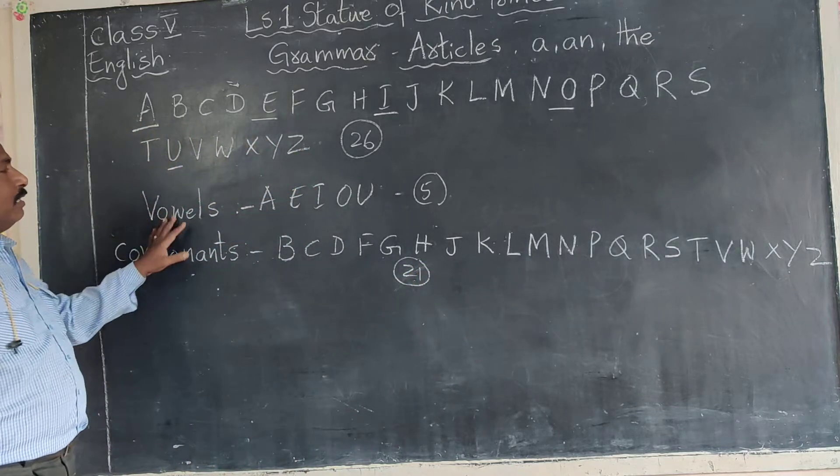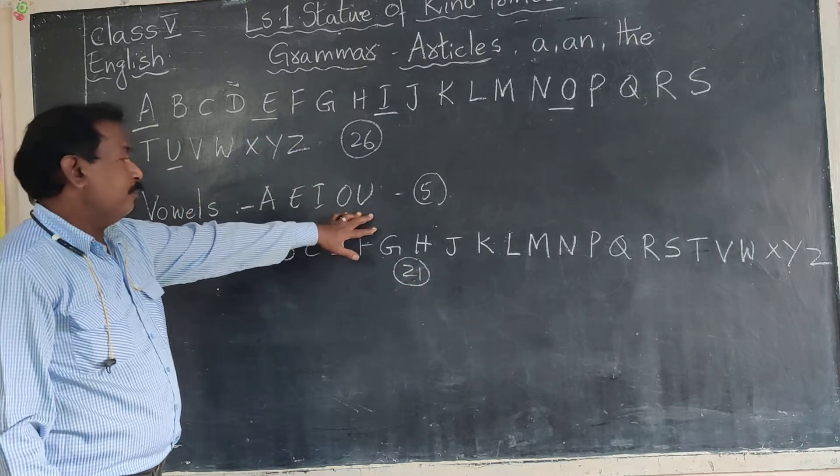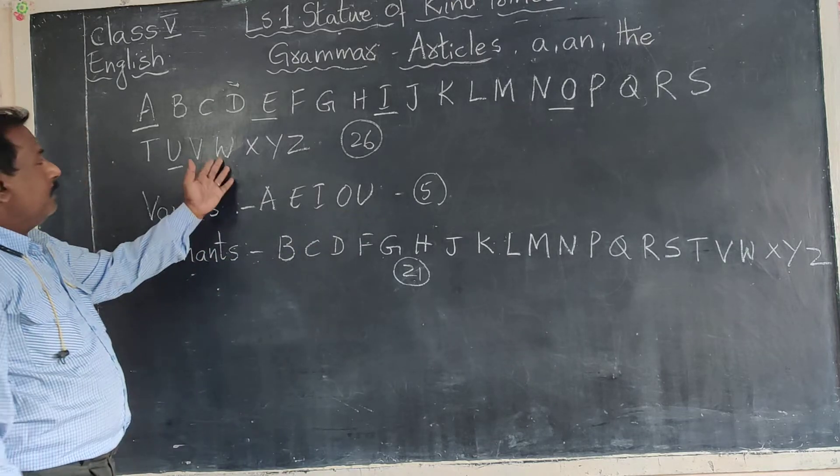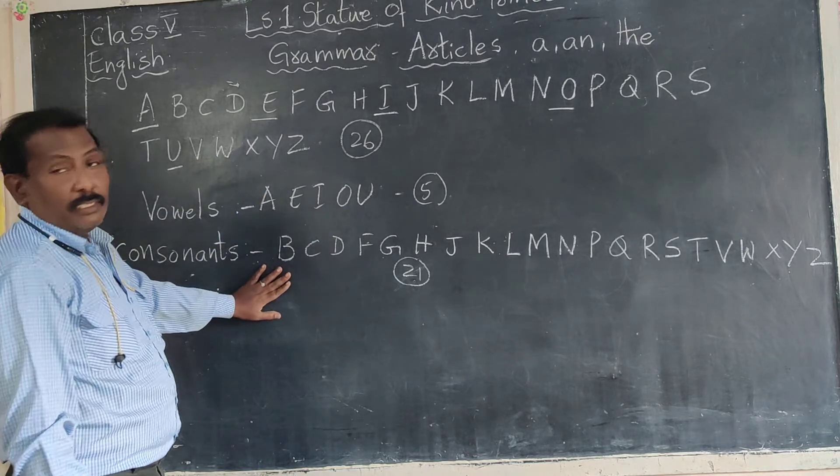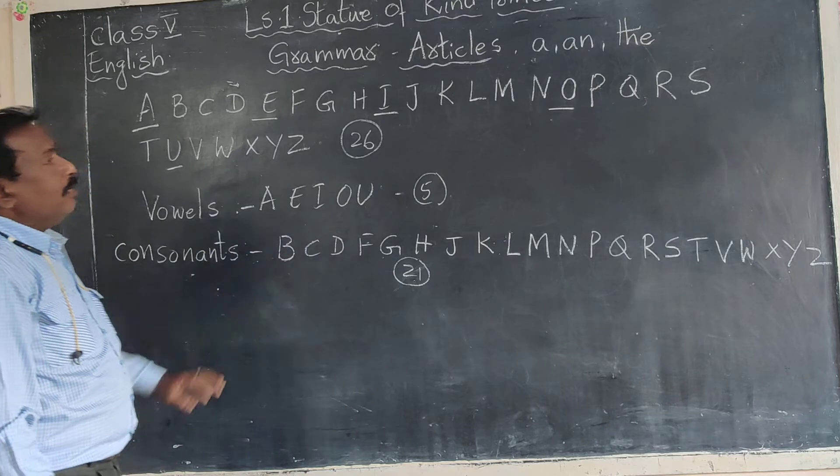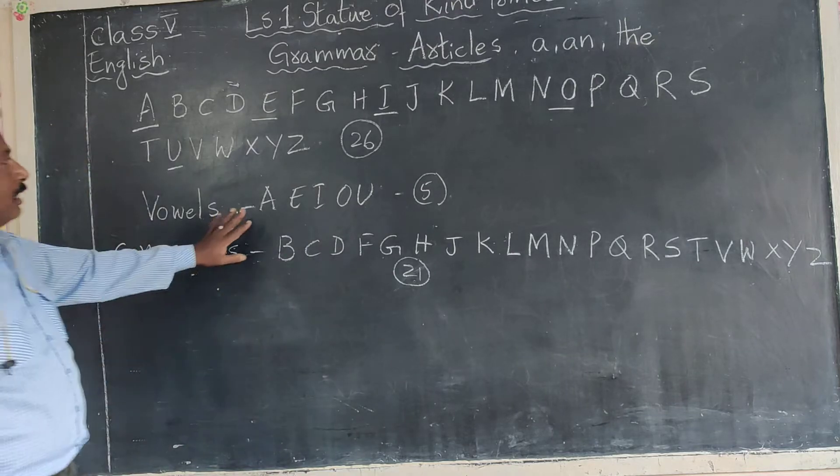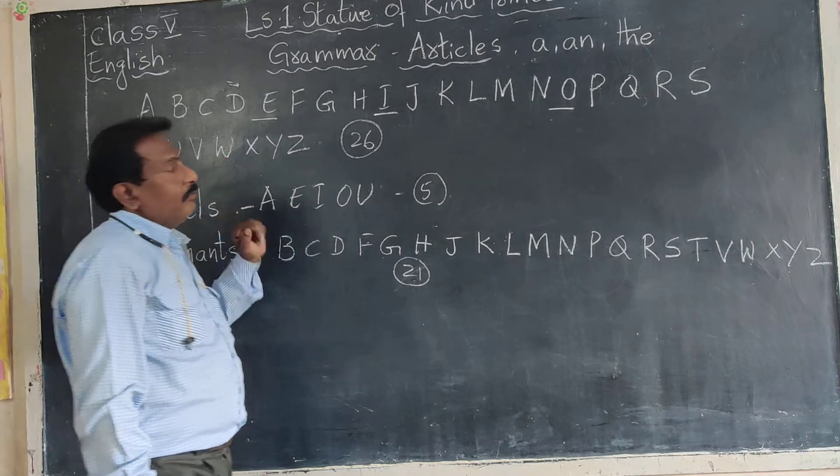So, vowels are A, E, I, O, U. And consonants, other than vowels, these are the consonants. Now you know what are vowels and consonants. Now, let us see.